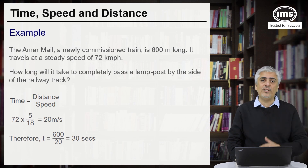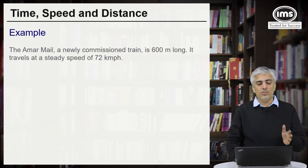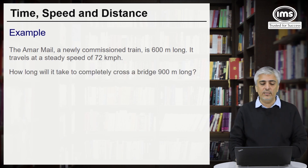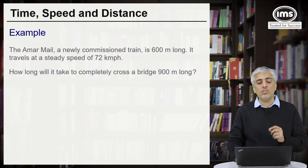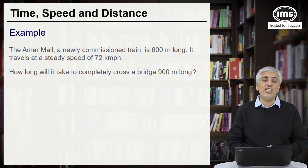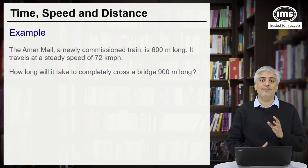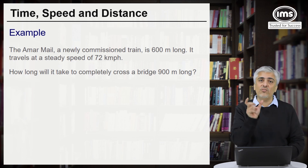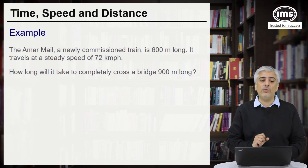We are going to continue with the same example — Case 2. The same train, 600 meters long, travelling at 72 km per hour. How long will it take to completely cross a bridge which is 900 meters long? The train has to cross the bridge which is 900 meters long — we are crossing one stationary body that has a concrete length. So what is the total distance we need to consider? We take the length of the train plus the length of the bridge, which is 900 meters.